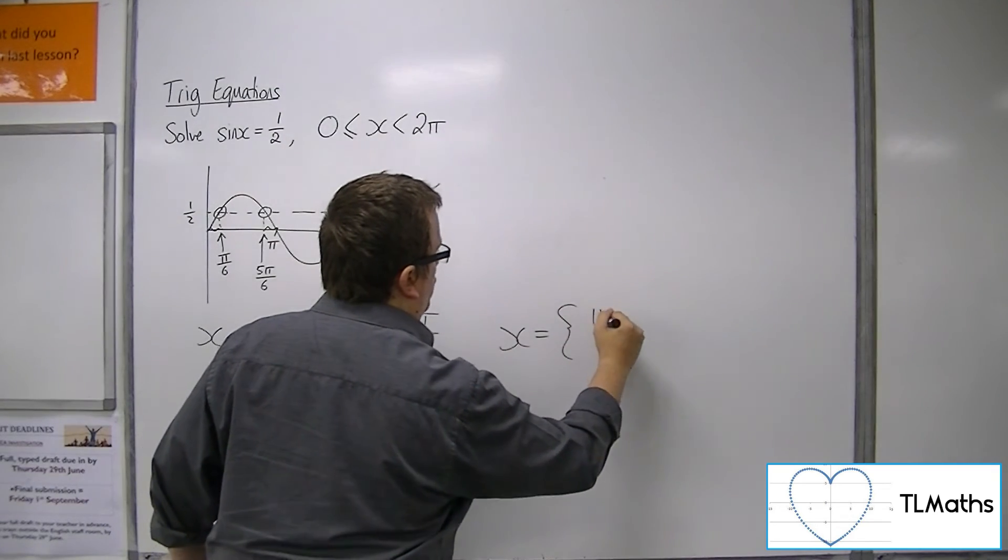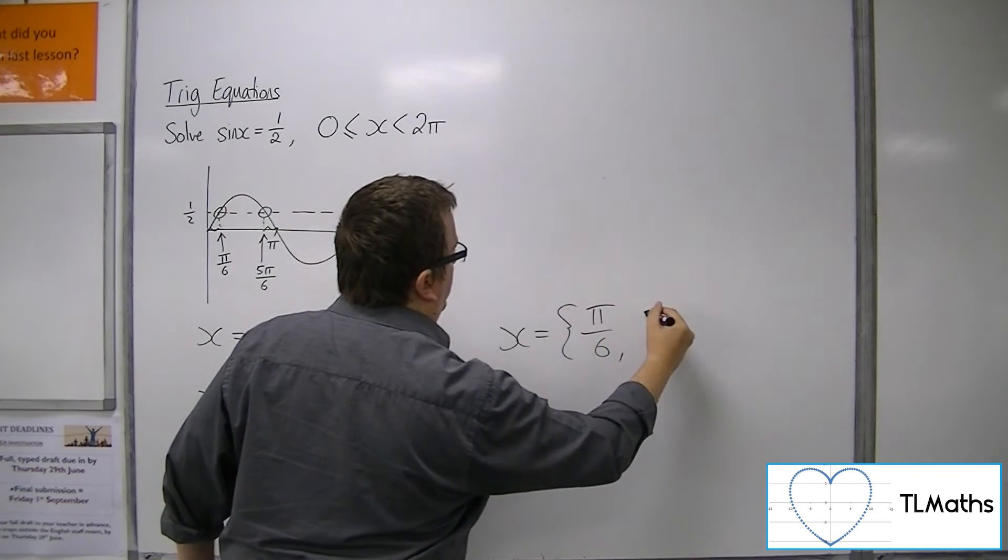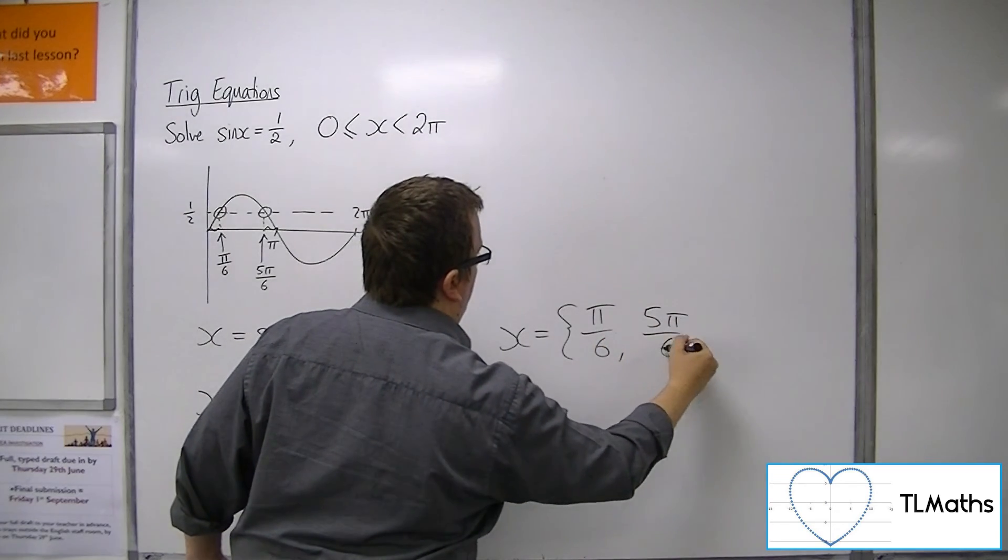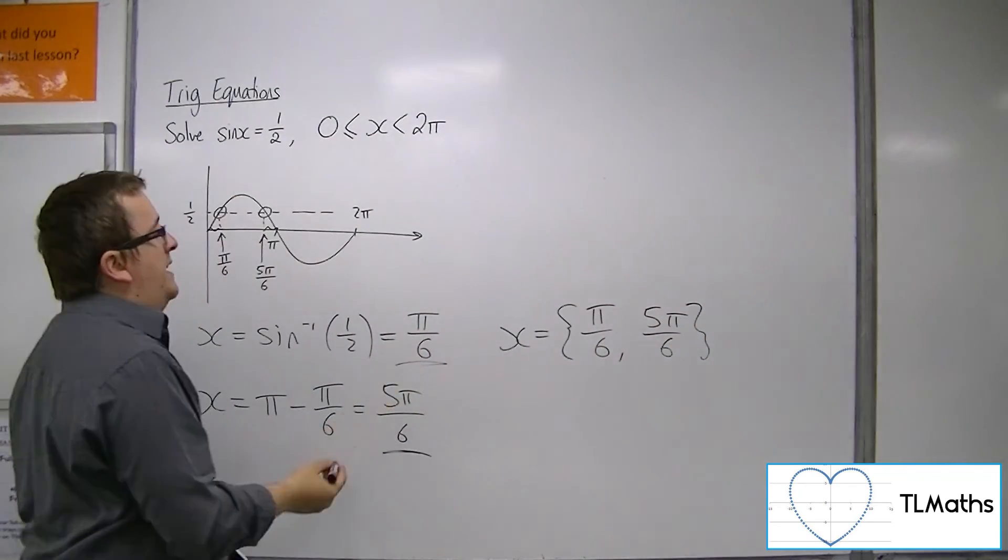So you have two solutions: x is pi over 6, or 5 pi over 6, between 0 and 2 pi.